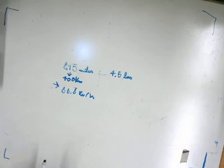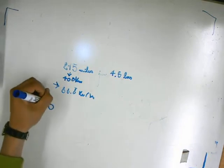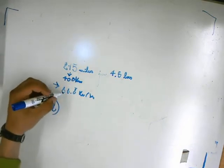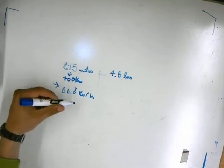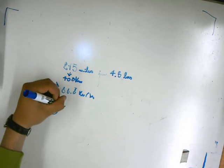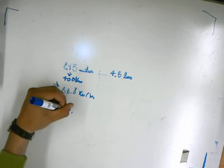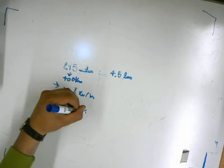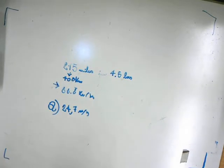But the problem asks how much is the average speed in meters per second, so we just have to change the kilometers to meters and hours to seconds. The result is 24.7 meters per second, which is 88 divided by 3.6.